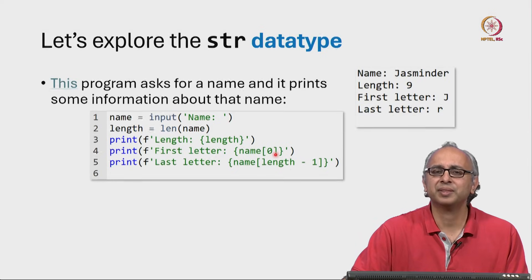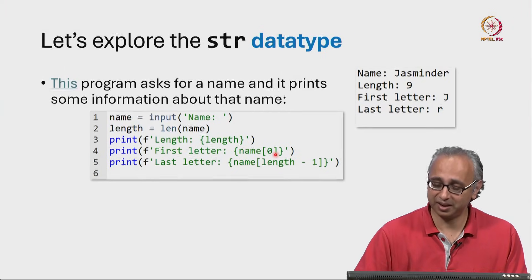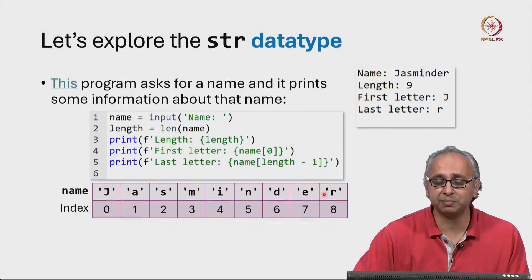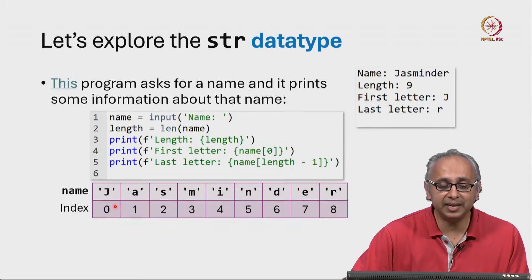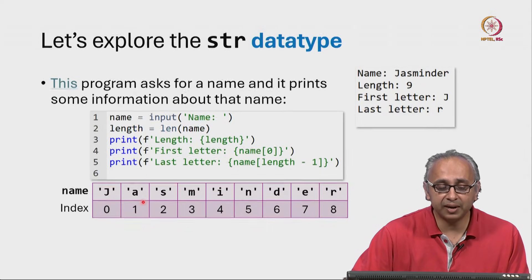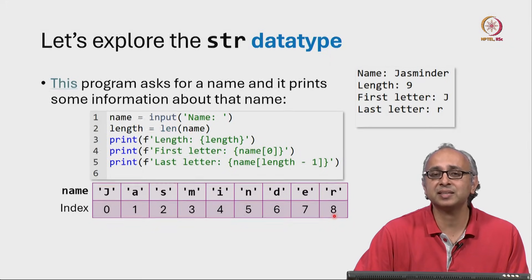Well, it turns out that strings are indexed starting from 0. So we say that in the name Jasminder, the letter at index 0 is J, the letter at index 1 is A, and so on all the way up to the letter at index 8.